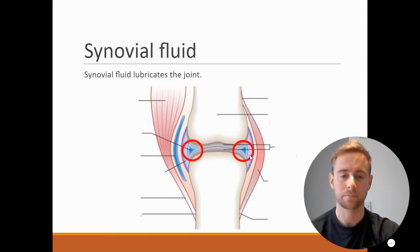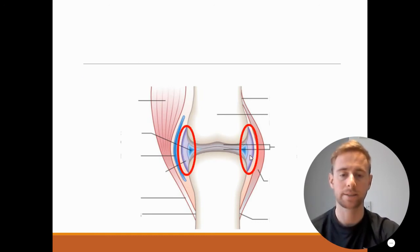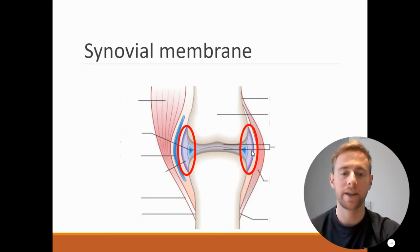Next we have the purple bits here. What these are, they surround the synovial fluid and they are the synovial membrane. Now the synovial membrane's role is to produce synovial fluid.